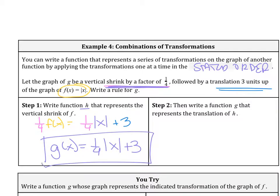Again, the important thing to note is that we do what's first. It says vertical shrink by a factor of 1/4, we do that first. Then we add the 3 at the end.